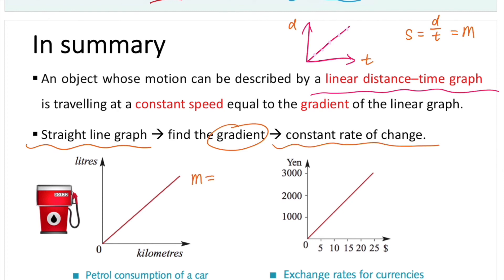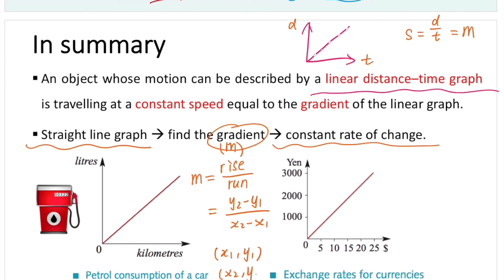One more quick revision: gradient m = rise/run = (y2 − y1)/(x2 − x1). If you have two ordered pairs — (x1, y1) and (x2, y2) — on your linear graph, you can easily find the gradient using this formula. In real life, linear graphs are commonly used, for example in petrol consumption of a car or exchange rates for currencies. I hope you find this video helpful, and hope to see you in the next video.